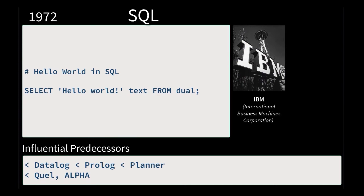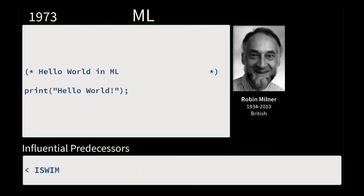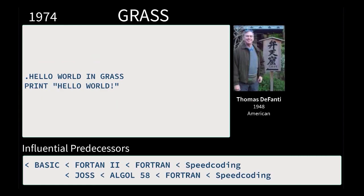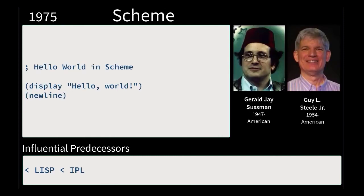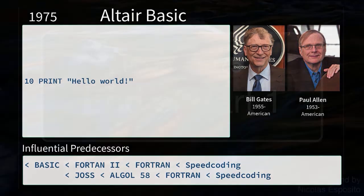SQL is the most well-known database language and modern iterations are still widely used today. Then we move into COMAL and ML — ML was actually a fairly original language. CLU looks quite a bit different from some of the others. Grasp was the language used in the original Star Wars to create the graphics seen in the briefing room. Scheme is still fairly important today with modern iterations. And we'll lastly wrap up this video with Altair Basic with Bill Gates and Paul Allen.